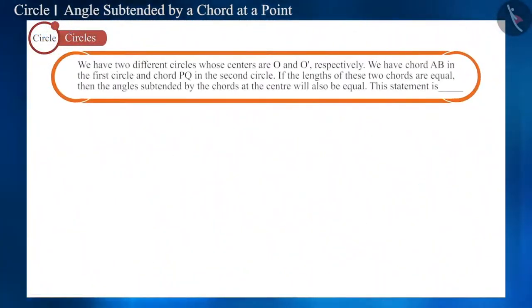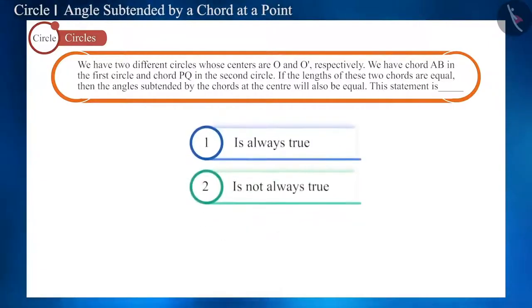We have two different circles whose centers are O and O' respectively. We have chord AB in the first circle and chord PQ in the second circle. If the lengths of these two chords are equal, then the angles subtended by these chords at the center will also be equal. From the given options, choose the correct option for this statement.